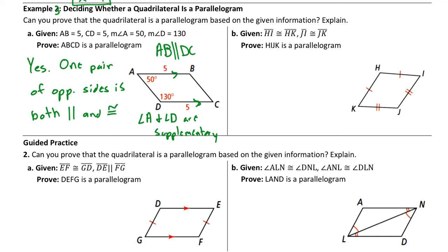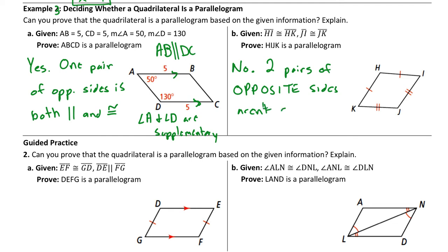For part B, that is not enough information to prove the quadrilateral is a parallelogram. We do have pairs of sides congruent, but we do not have two pairs of opposite sides congruent. HI and HK are not opposite sides, and KJ and JI are not opposite sides. The sides are congruent, but they're not opposite from each other. The congruent sides must be opposite from each other to make it a parallelogram — so part B is a no.